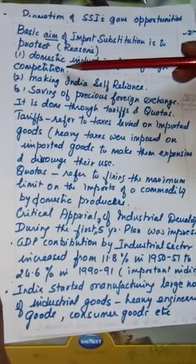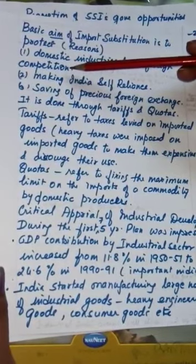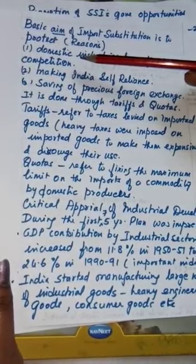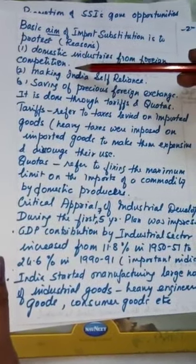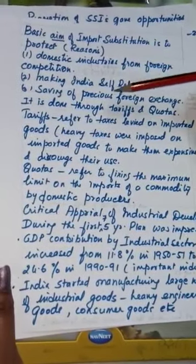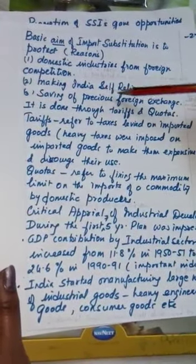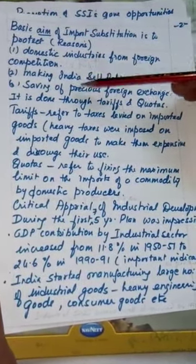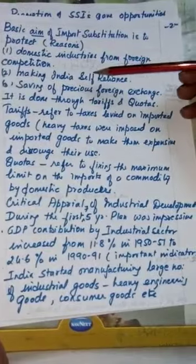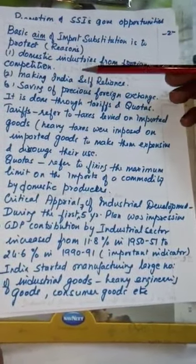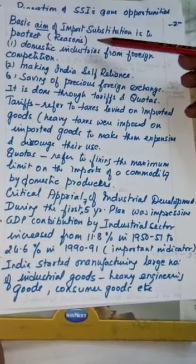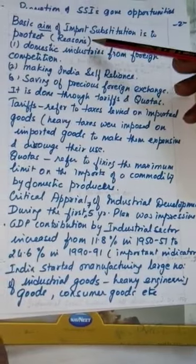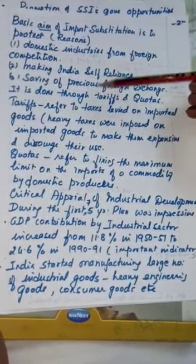The basic aim of import substitution is to protect domestic industries from foreign competition. It was assumed that if domestic industries were protected, they would learn to compete over time. Second, making India self-reliant. Third, saving the precious foreign exchange — every country maintains certain foreign exchange, and India, being a developing country, needed to protect it. These were the aims and reasons for supporting domestic industries.